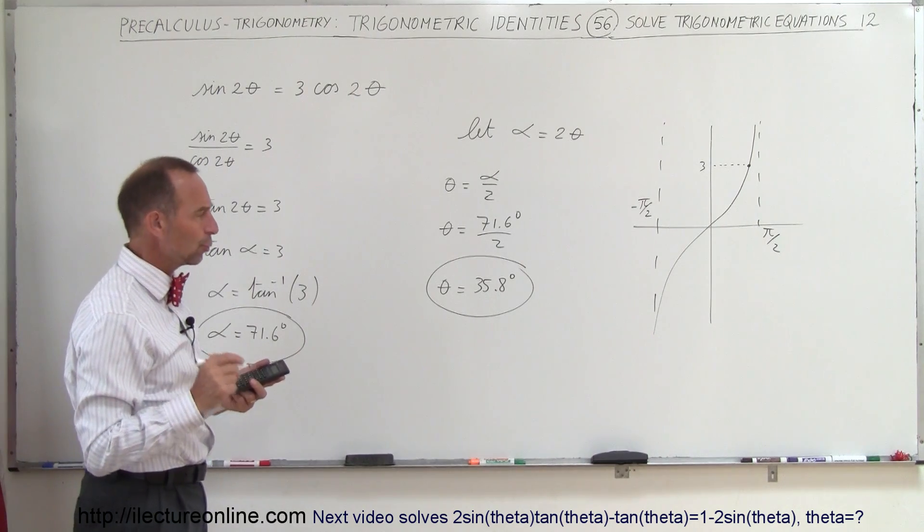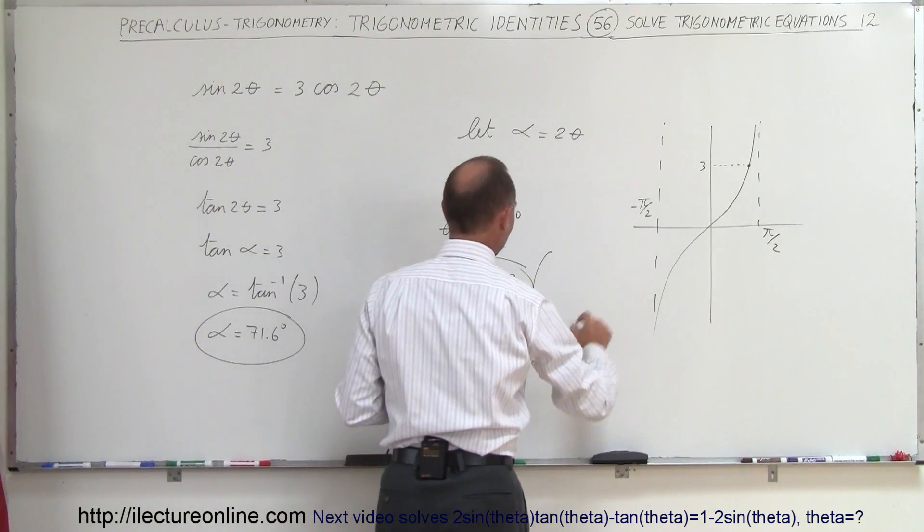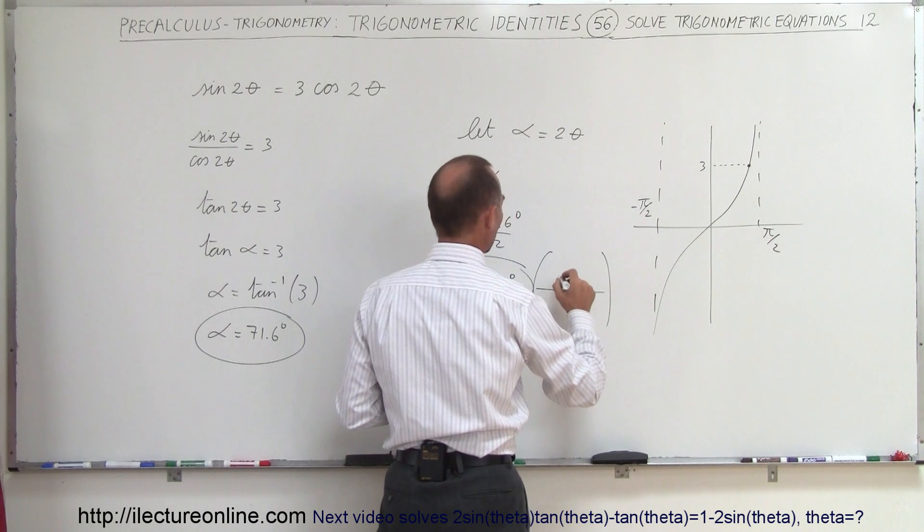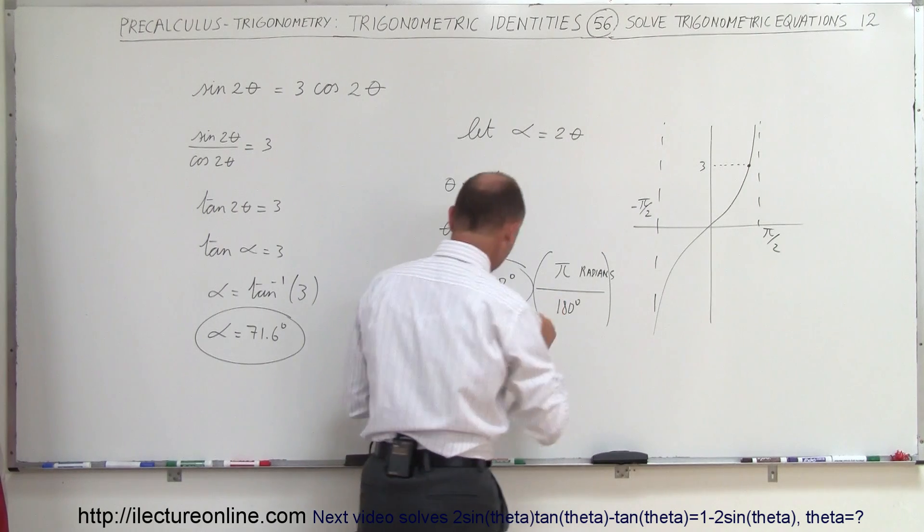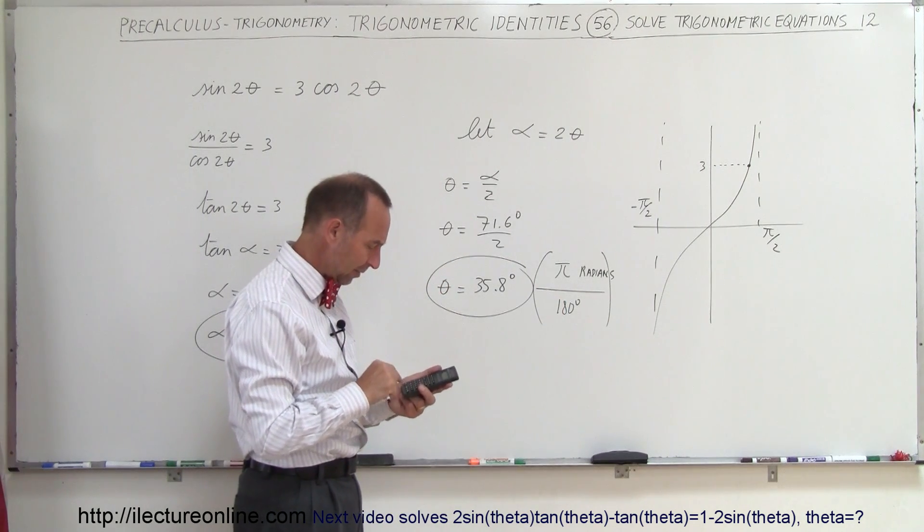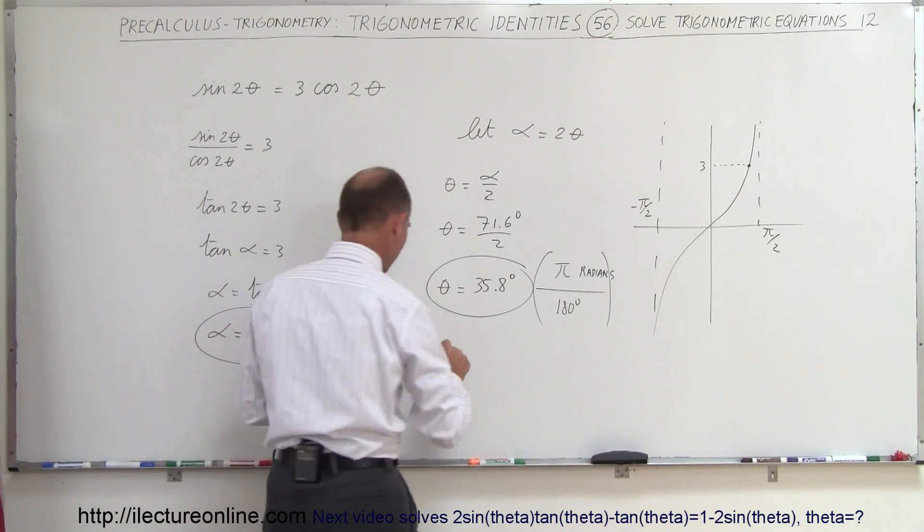Now, of course, you want to convert that to radians. We can multiply this times the conversion factor, which is π radians divided by 180 degrees. So if I take that number and divide by 180, I have the answer in π, so this equals 0.199π.